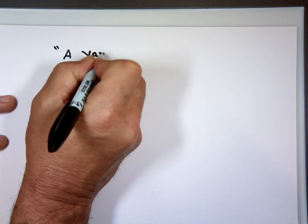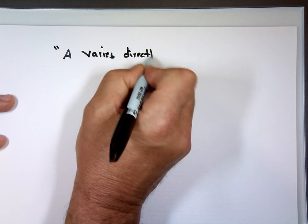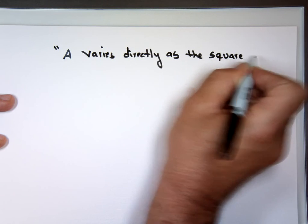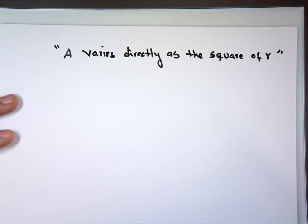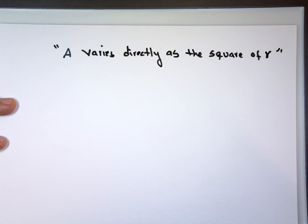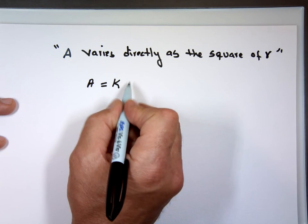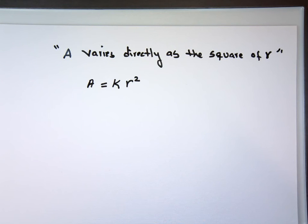A varies directly as the square of R. The square of R. That means A equals what? K times the square of R. What's the square of R? R squared. Don't be surprised to see the square, the square root, the cube. So that's inverse variation, direct variation, joint variation. That's really the extent of it, proportion and variation.